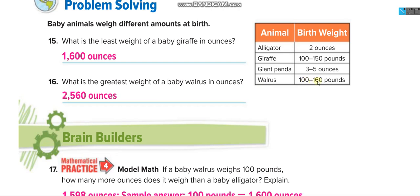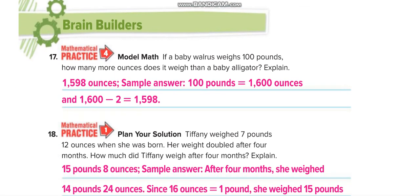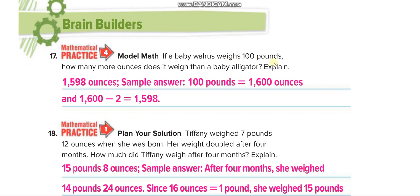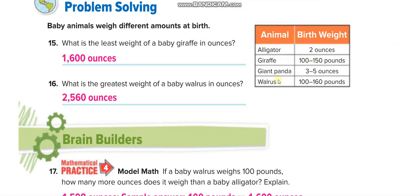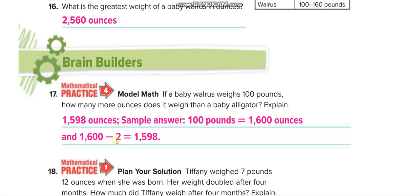If a baby walrus weighed 100 pounds, how many more ounces does it weigh than a baby alligator? First convert to ounces: 100 times 16 equals 1,600 ounces. The baby alligator weighs 2 ounces, so we subtract 2 from 1,600, giving 1,598 ounces difference. That is a huge difference between them.